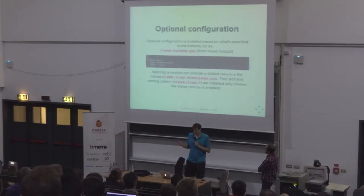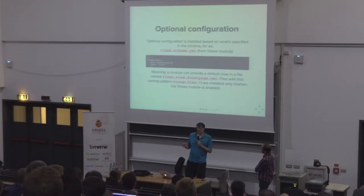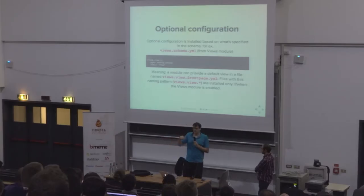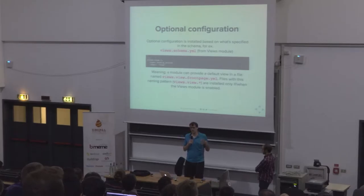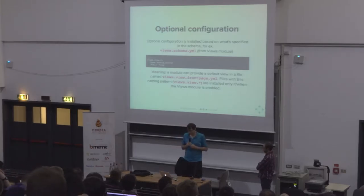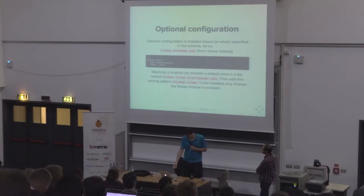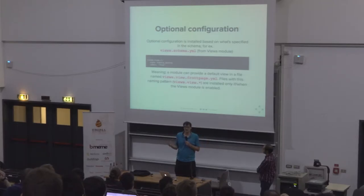Drupal knows this through the schema. The view schema defines views, and the module that provides the schema is checked when you enable a module — it will check through all config/optional directories to see if they provide configuration that the new module has a schema for. Configuration also automatically depends on the module that provides it. For example, views.view.front_page.yaml depends on views because that's the kind of configuration where the schema is defined.